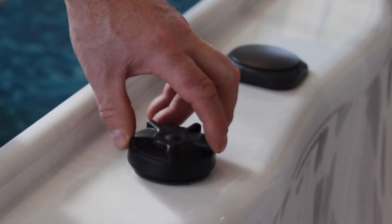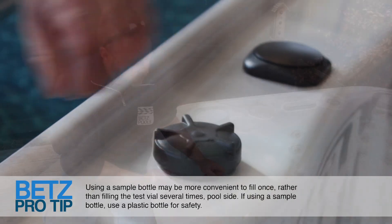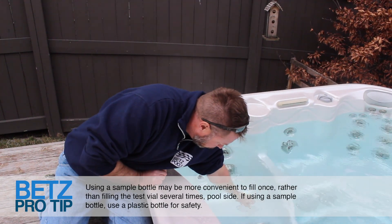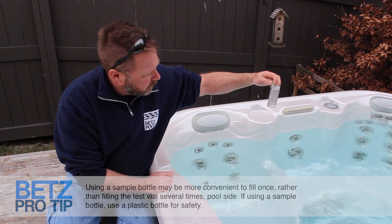If testing a spa, make sure the jets and blowers are turned off. It's also important to take the sample 12 to 18 inches below the surface for both pools and spas.